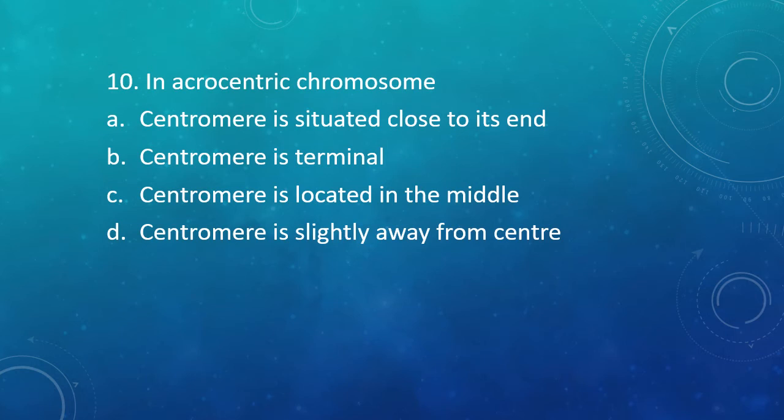Question 10: In an acrocentric chromosome — Option A: Centromere is situated close to its end. Option B: Centromere is terminal. Option C: Centromere is located in the middle. Option D: Centromere is slightly away from the center. The correct answer is Option A. Based on centromere location and arm length, chromosomes are divided into metacentric (centromere in middle, equal halves), submetacentric (centromere slightly away from middle), acrocentric (centromere close to one end), and telocentric (centromere terminal).